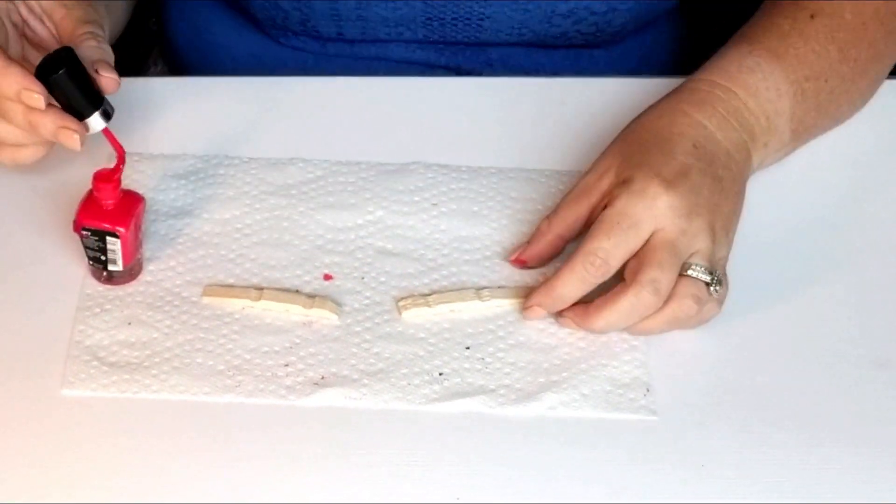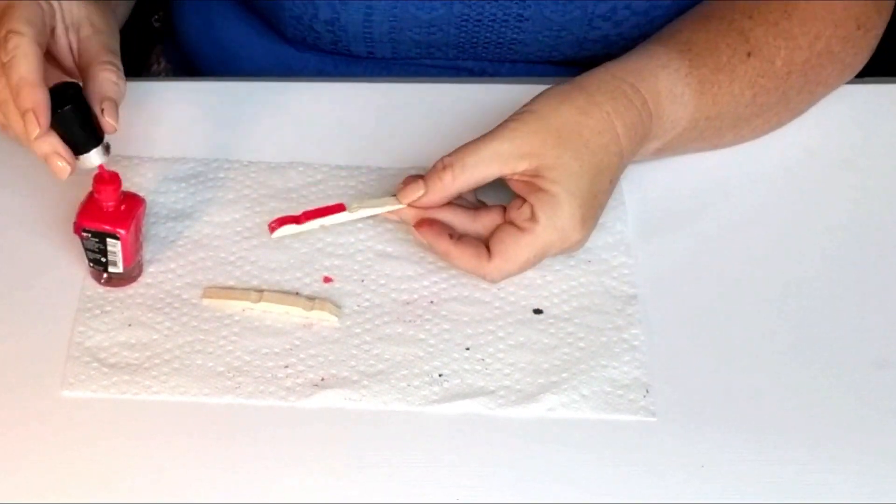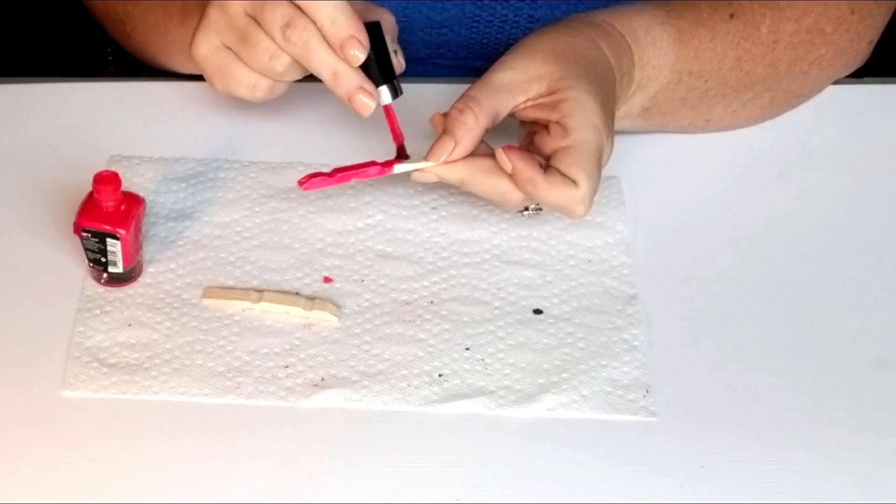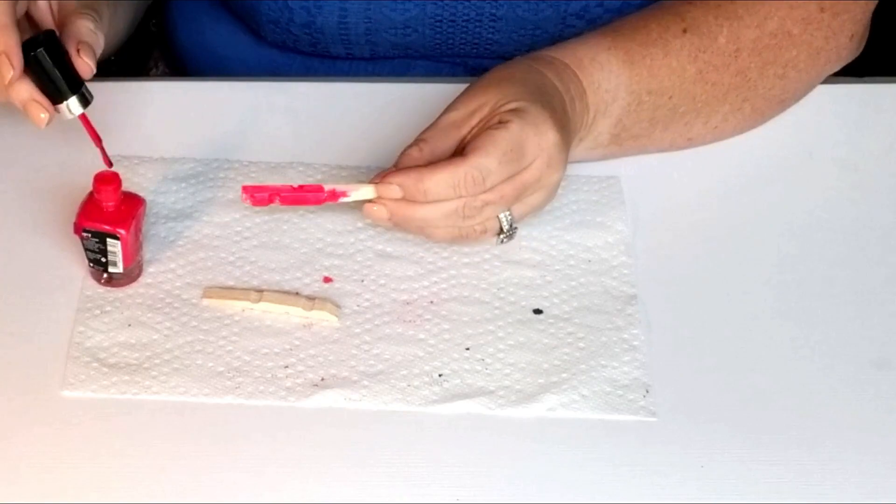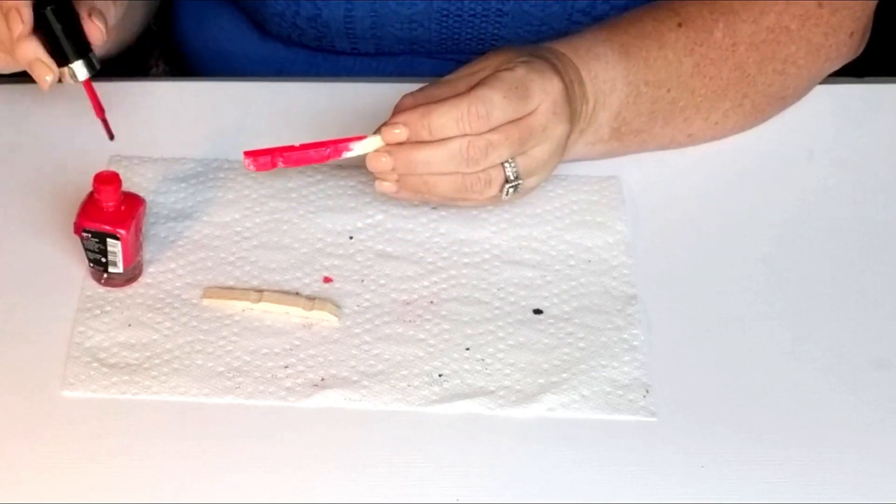Now this nail polish is Wet n Wild and the label is gone and I don't know what color it is, but it's like a very hot pink color.